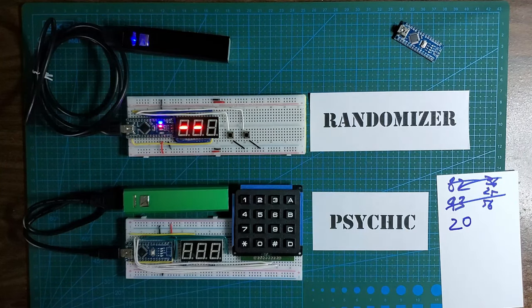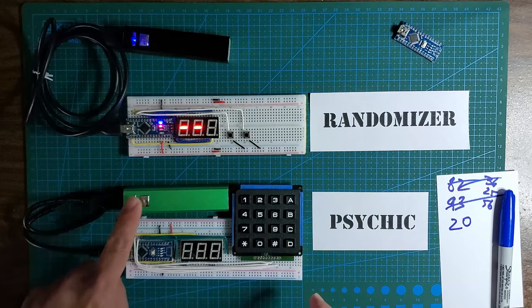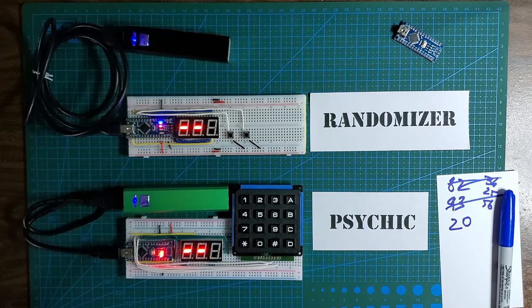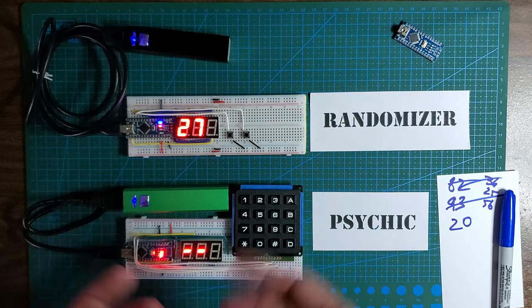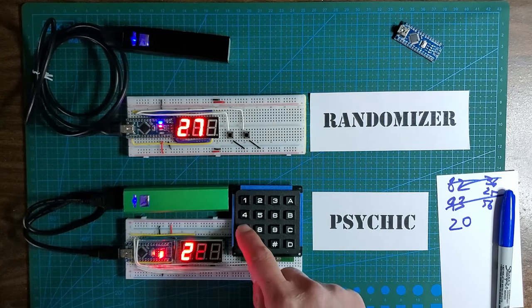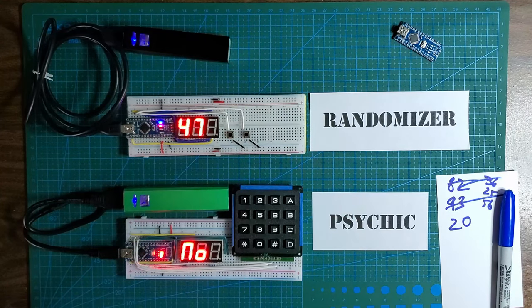Do the same thing again, and then we'll wake up the psychic. He suspects nothing. Let's pick another random number.